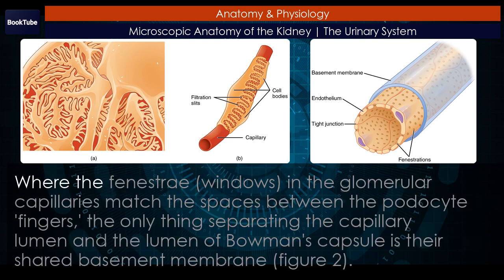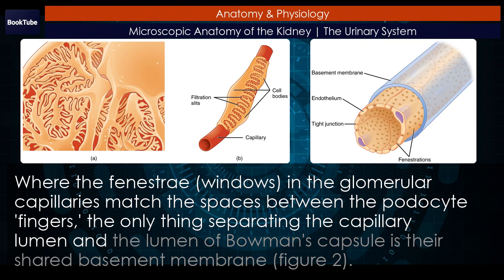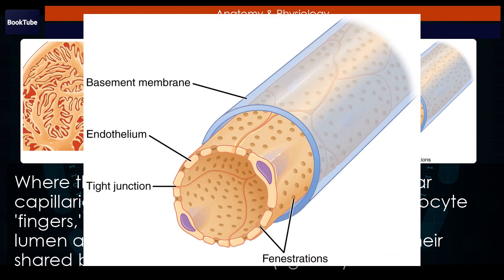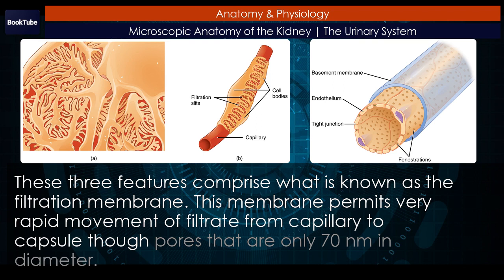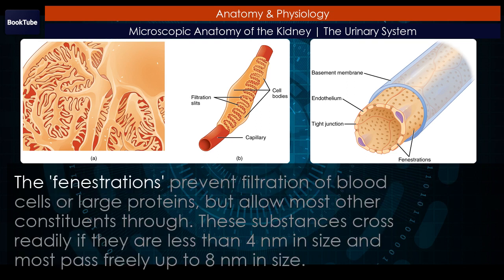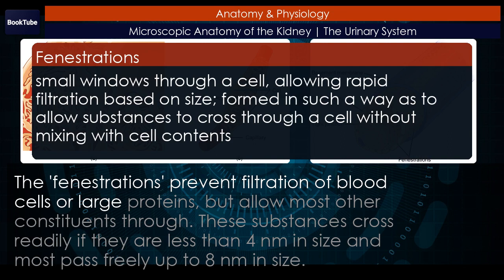Where the fenestrae — windows — in the glomerular capillaries match the spaces between the podocyte fingers, the only thing separating the capillary lumen and the lumen of Bowman's capsule is their shared basement membrane. (Figure 2.) These three features comprise what is known as the filtration membrane. This membrane permits very rapid movement of filtrate from capillary to capsule through pores that are only 70 nanometers in diameter. The fenestrations prevent filtration of blood cells or large proteins.